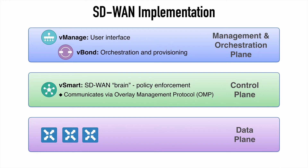And finally, in the data plane, we have the actual WAN edge routers themselves, which are responsible for establishing the network and for forwarding traffic. These devices can be either physical or virtual, or we can have a combination of those. These SD-WAN capable edge routers are referred to as Cisco V-edge routers.